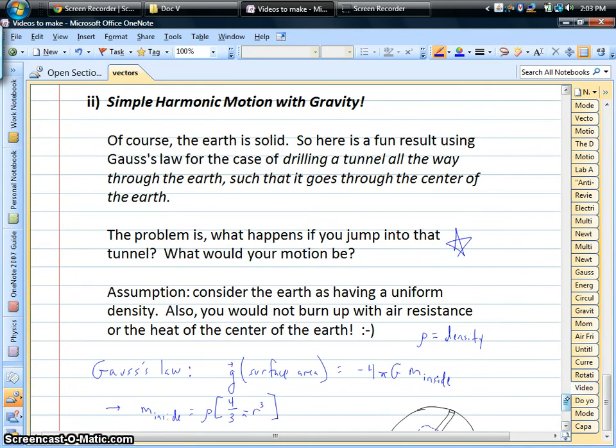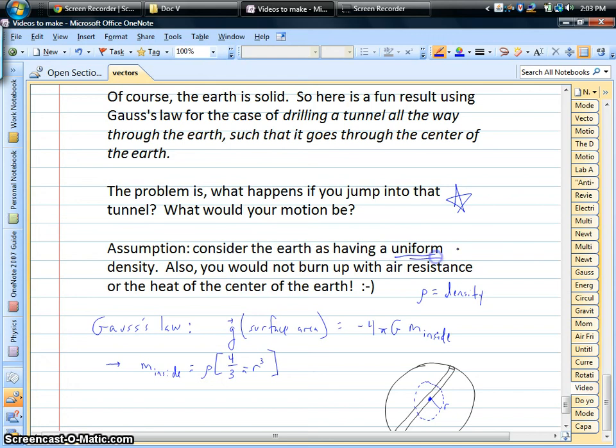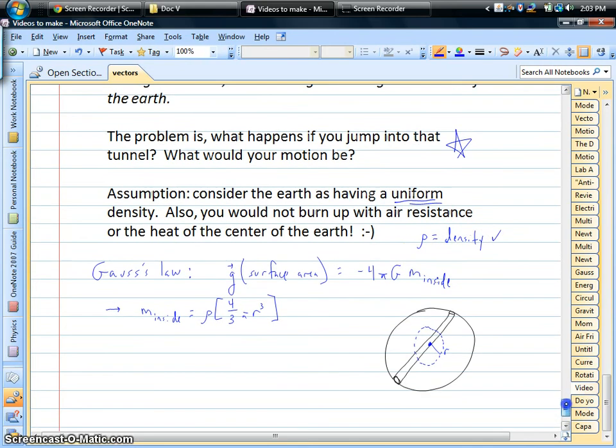Now the assumption that we're going to make is that the Earth has a uniform or a constant density. And a common symbol for density is the Greek letter rho. Now here's Gauss's Law, very generically, saying that the gravitational field, little g, which is really the acceleration in gravity, times the surface area, we'll define that in a second, is equal to some constants times the mass inside of that surface area.